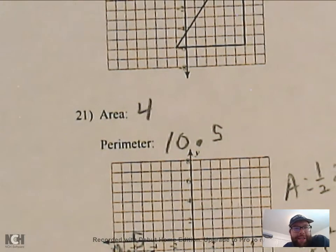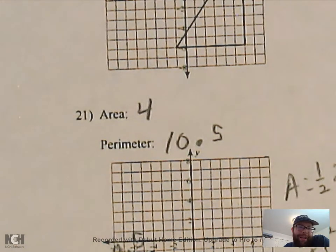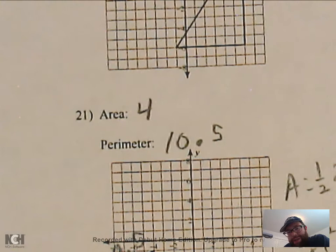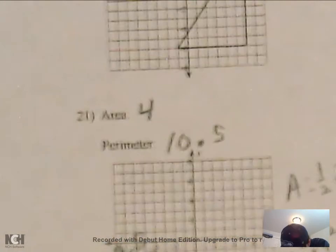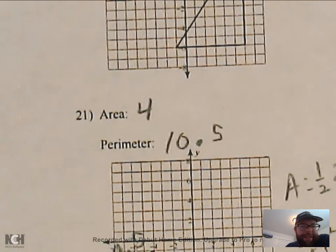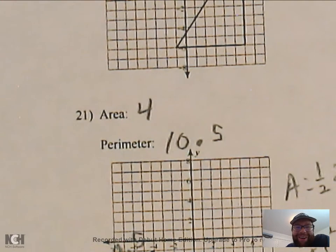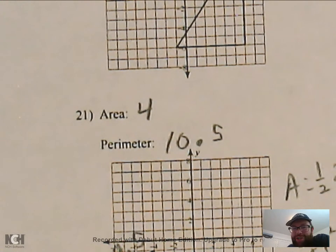That's essentially how you do it. The last tricky thing is you will get some decimals, so just make sure you convert to a decimal if your calculator doesn't do it already. If you have any questions, comments, or concerns, talk to your teachers — we're here to help, and I will see you out there.